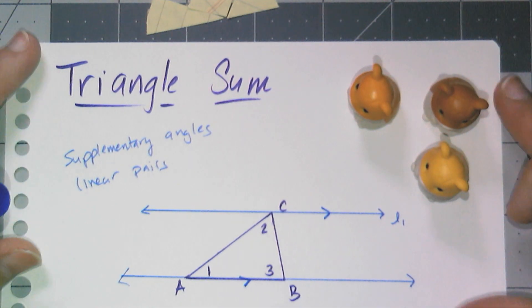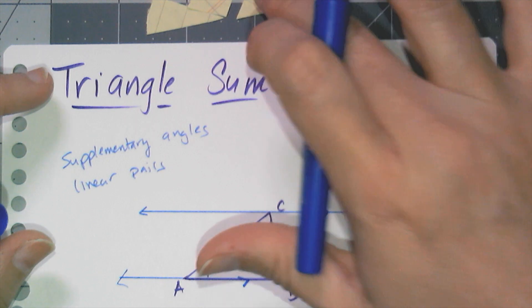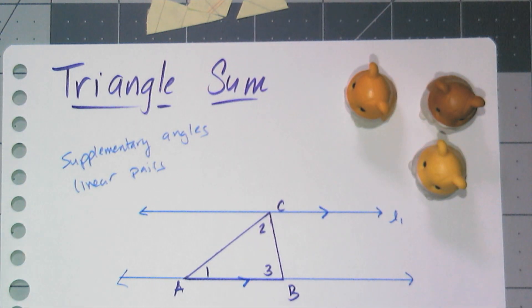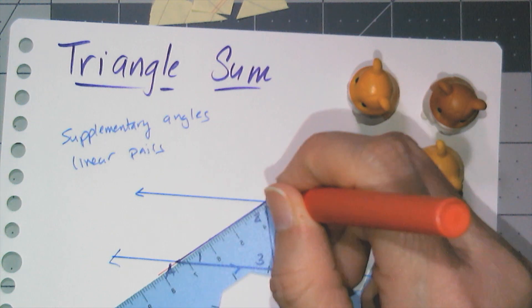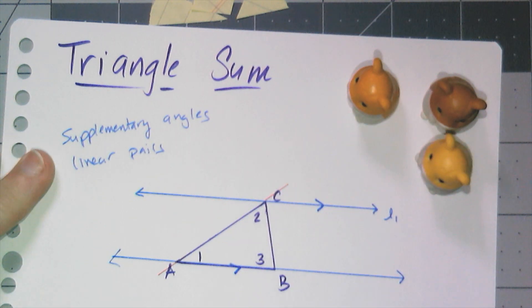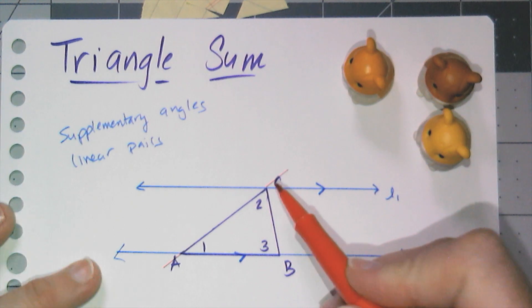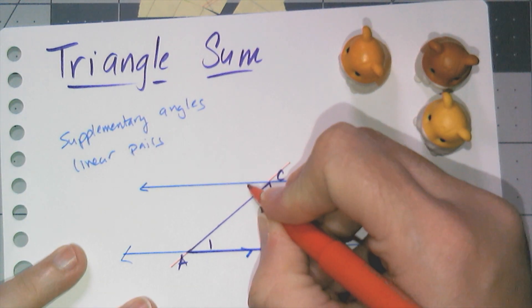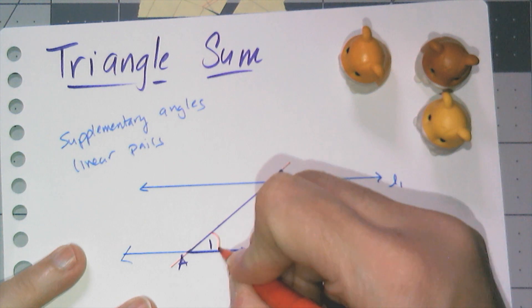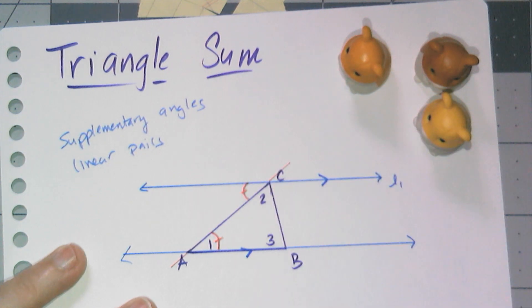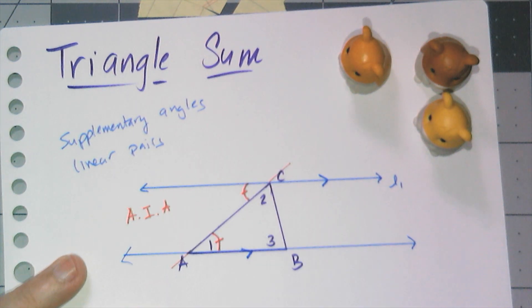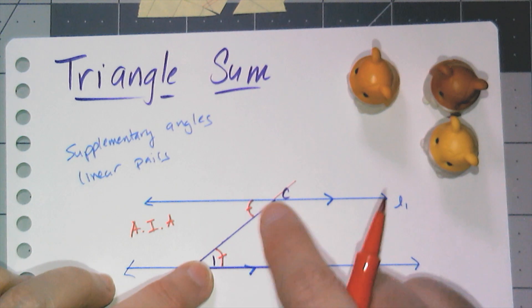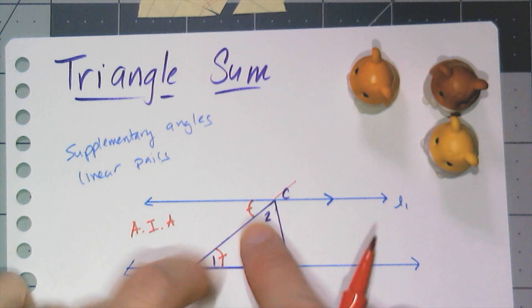And if you remember from parallel lines, I have a series of angles here that are congruent if I think of the sides of the triangles as transversals, right? So if I extend that side out a little bit to be like a transversal, then I know that this angle one is congruent to this angle up here because of alternate interior angles being congruent in parallel lines. So I have this angle one is basically the same as that angle up there.